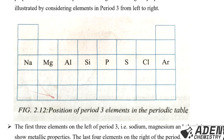Looking at this diagram showing the position of period 3 elements in the periodic table — the periodic table consists of eight groups and seven periods. This is period one, period two, and this is period three, and we have the members of period 3 elements here.